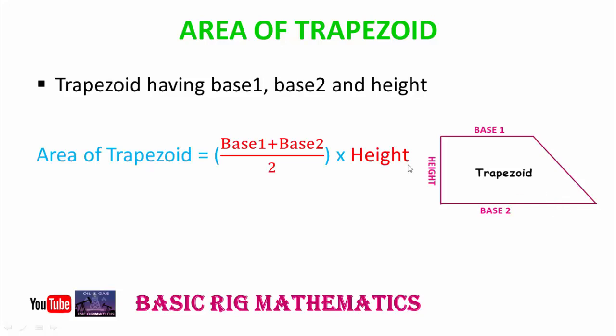So if we want to calculate its area, area of trapezoid is equal to base 1 plus base 2 divided by 2, multiplied by height. The height is replaced by capital H. So the final formula becomes: Area of trapezoid equals B1 plus B2 divided by 2, multiplied by H.